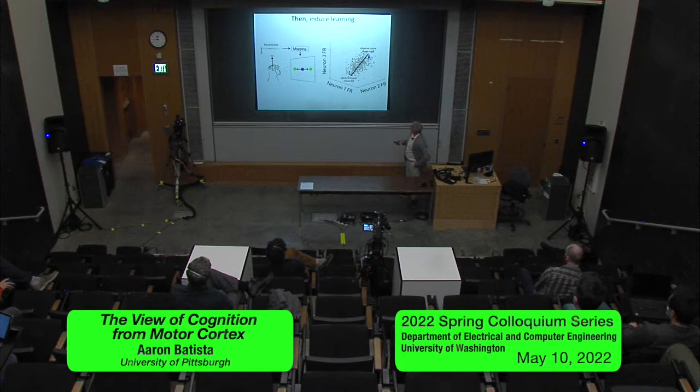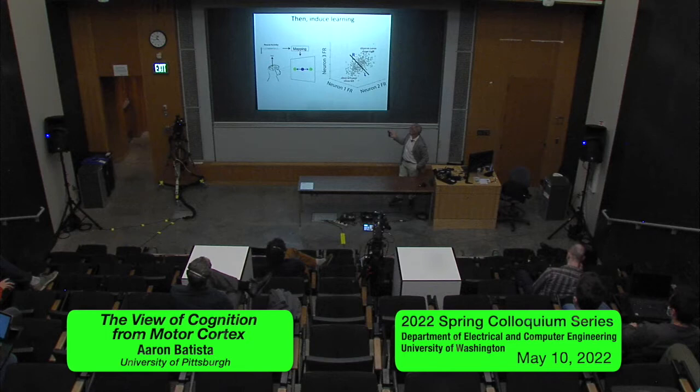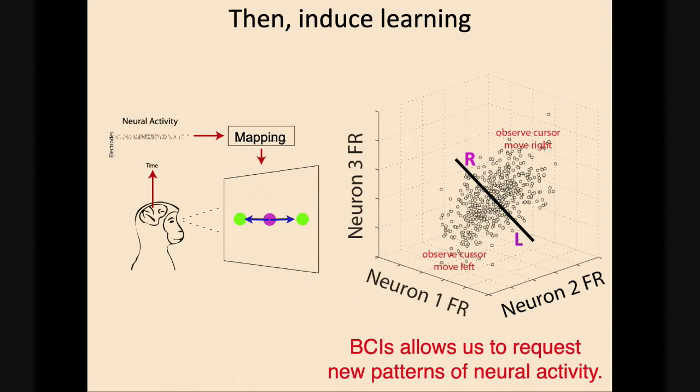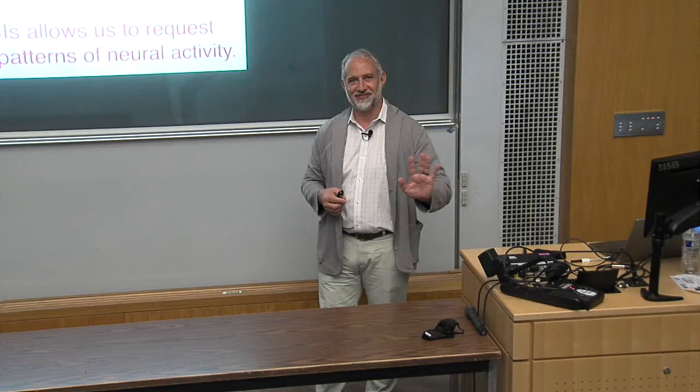We get neural activity in M1 and premotor cortex when the animal is simply observing the cursor move — reported by Paul Cisek and John Kalaska several years ago. When the cursor moves to the left, there are neural activity patterns that appear in a different region of state space. Fitting a BCI decoder can be thought of as dropping a plane into that space, so that neural activity patterns over here move the cursor fast to the right, and patterns over here move it fast to the left. That's the BCI. Here's how we can induce learning: we rotate that mapping, which totally changes the relationship between neural activity patterns and cursor movement.